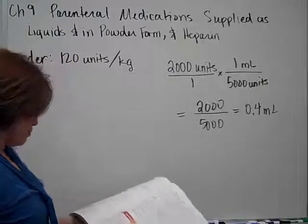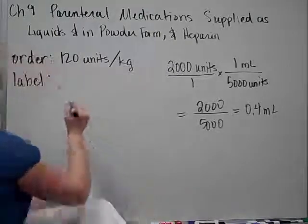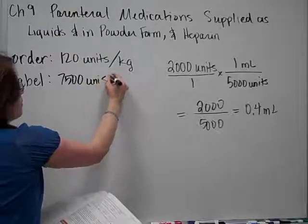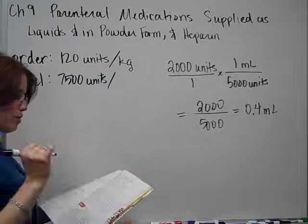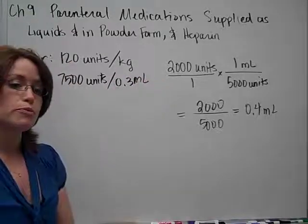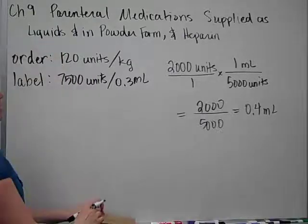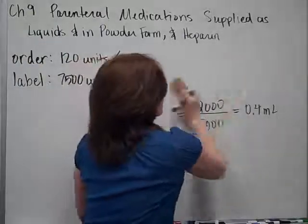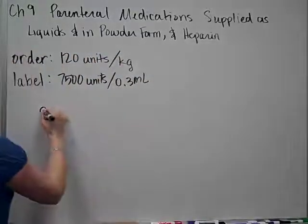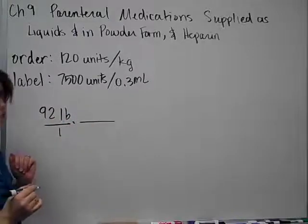Well, I am going to have to look at my label for that. If I look at my label, I have a concentration of 7,500 units per 3 tenths of a milliliter. So, I'm going to need to set up a dimensional analysis problem for this. But, the thing I'm going to need to start with is my patient, who is 92 pounds. So, if you ever have information about the patient, and it's part of the order, you need to start with the patient.